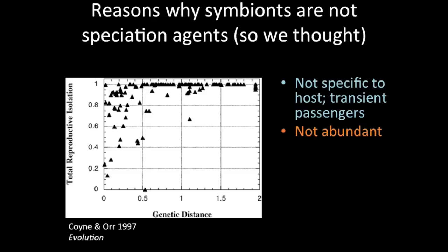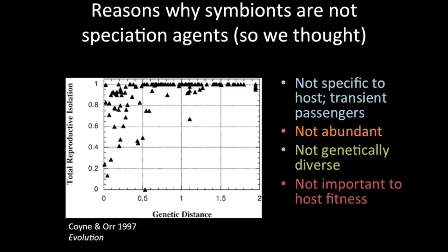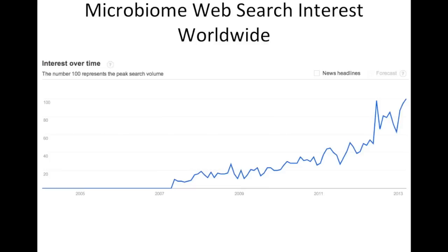Secondly, the notion that symbionts are not abundant is clearly outdated with the rise of molecular technology. We know that symbionts are universal in animals. The idea that they're not genetically diverse is also outdated — in the last few years we've understood that the symbiotic population can vastly outnumber the genetic diversity of the nuclear genome. And the claim that symbionts aren't important to host fitness at a wide taxonomic range is clearly not true.